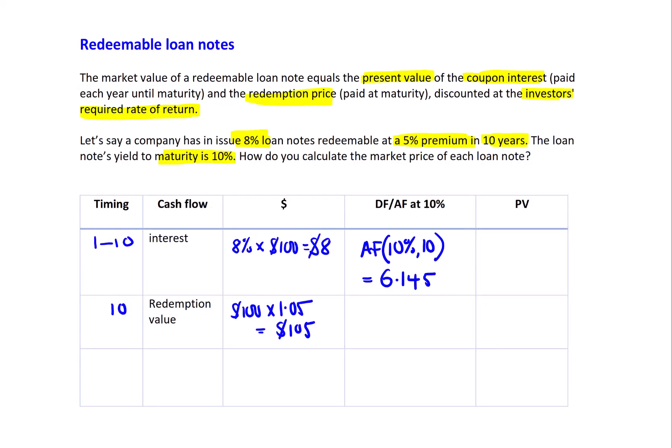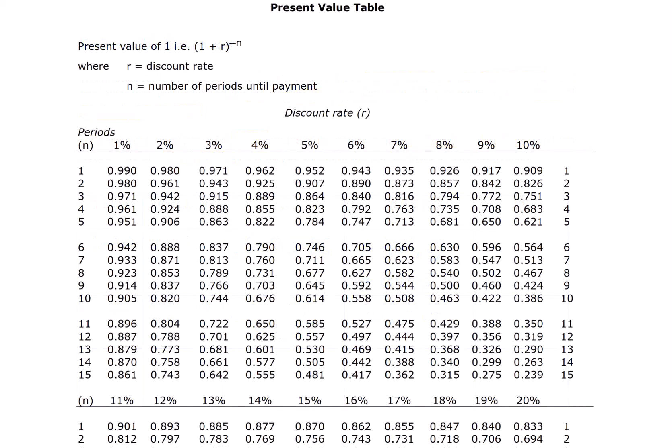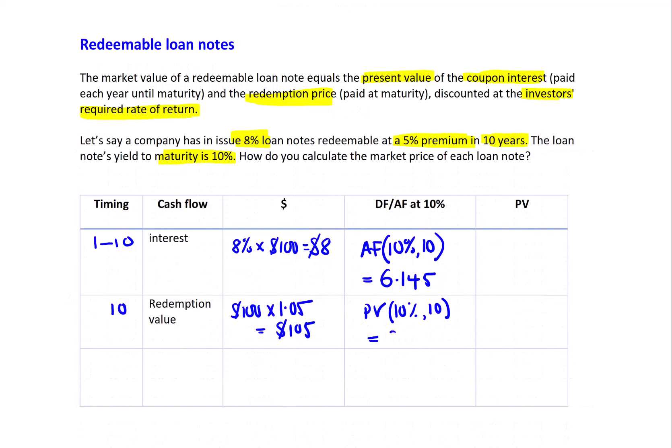We now need to find the present value factor for the redemption value because that comes in at the end of year 10. Again, that will be at 10% for year 10. Here we have the present value table, and we take 10% for year 10, and the value is 0.386.